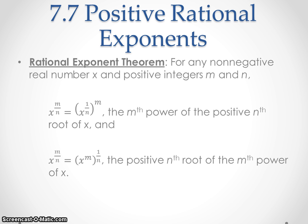Let's talk first about our rational exponent theorem. It says: for any non-negative real number x and positive integers m and n, if we have a rational exponent — x to the m over n power — the m over n is what makes it rational. You can break it down: you can write m and n separately, so you'd have x to the 1 over n power, and then m out here by itself.